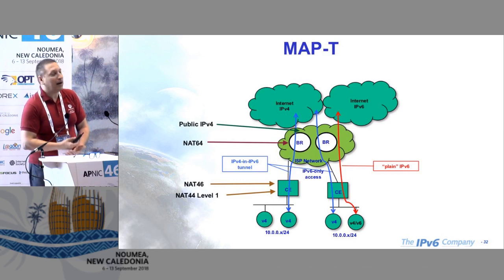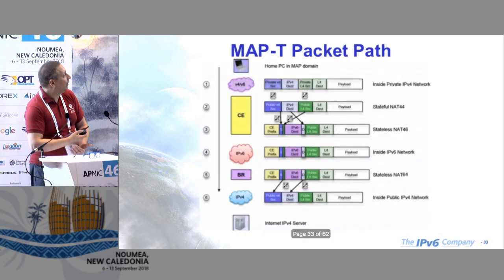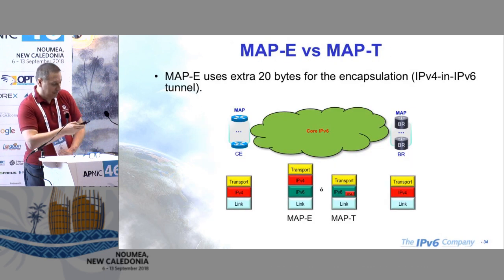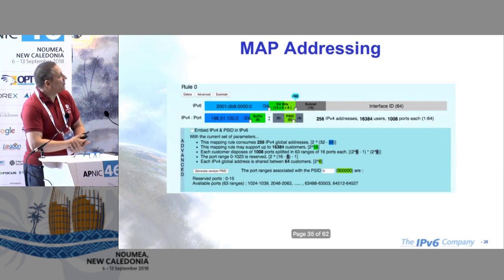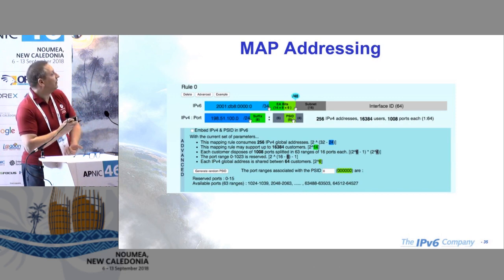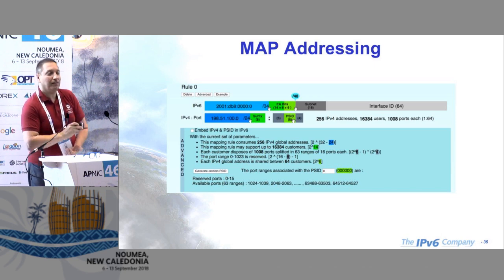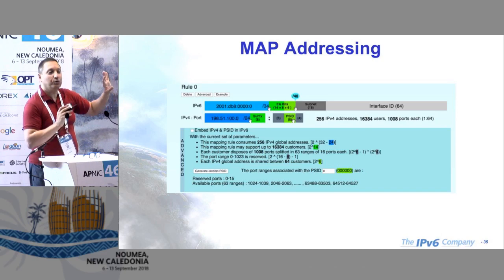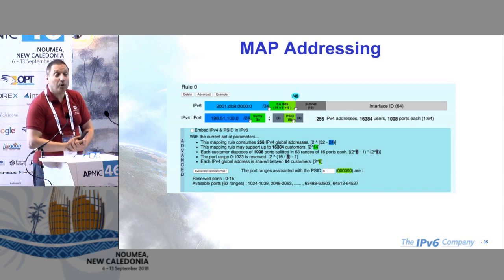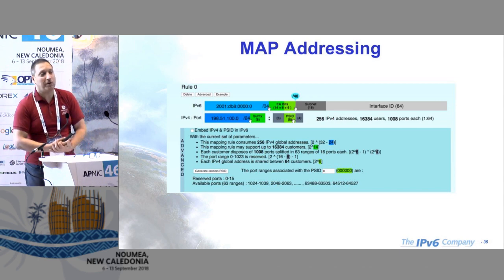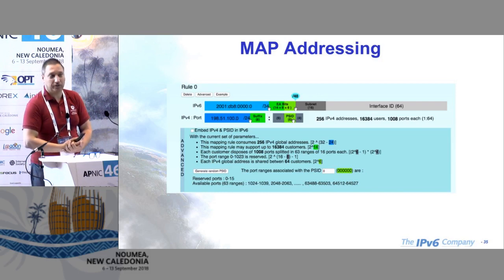Cisco offers a tool on their website to create your MapE or MapT configuration based on your prefix — it's simple, but it forces you to use the addressing plan the protocol creates for you. I don't think that's a good idea. The addressing plan in any network is so important that you need to pay a lot of attention to develop it, and you don't want to renumber your network sooner or later.